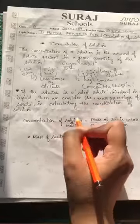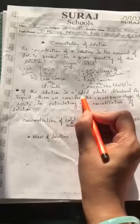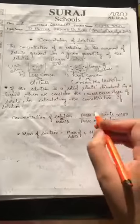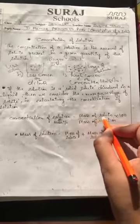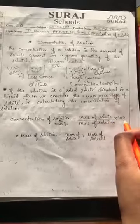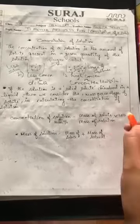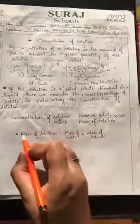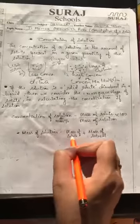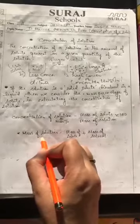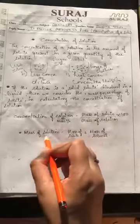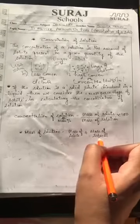The formula for mass percentage is used because the solute is in solid form. The formula is: mass percentage equals mass of solute upon mass of solution, multiplied by 100. The solution has two components — solute and solvent.